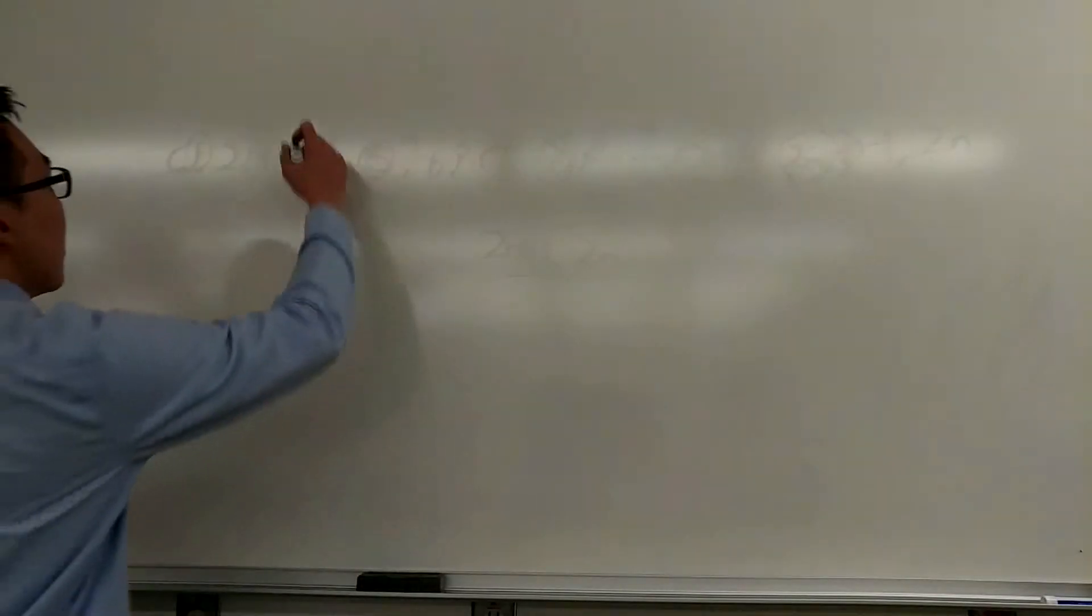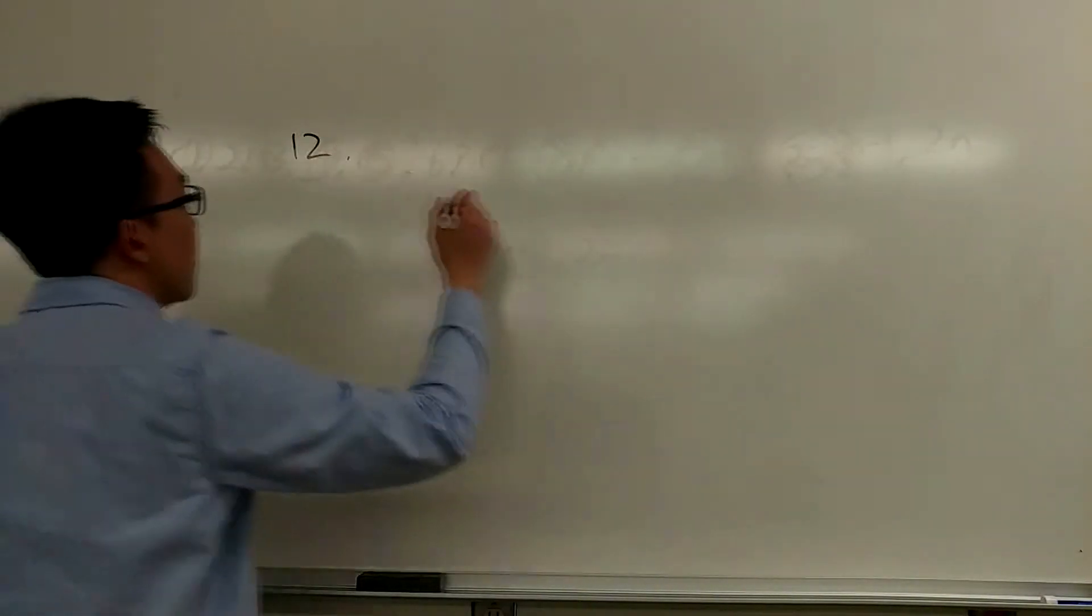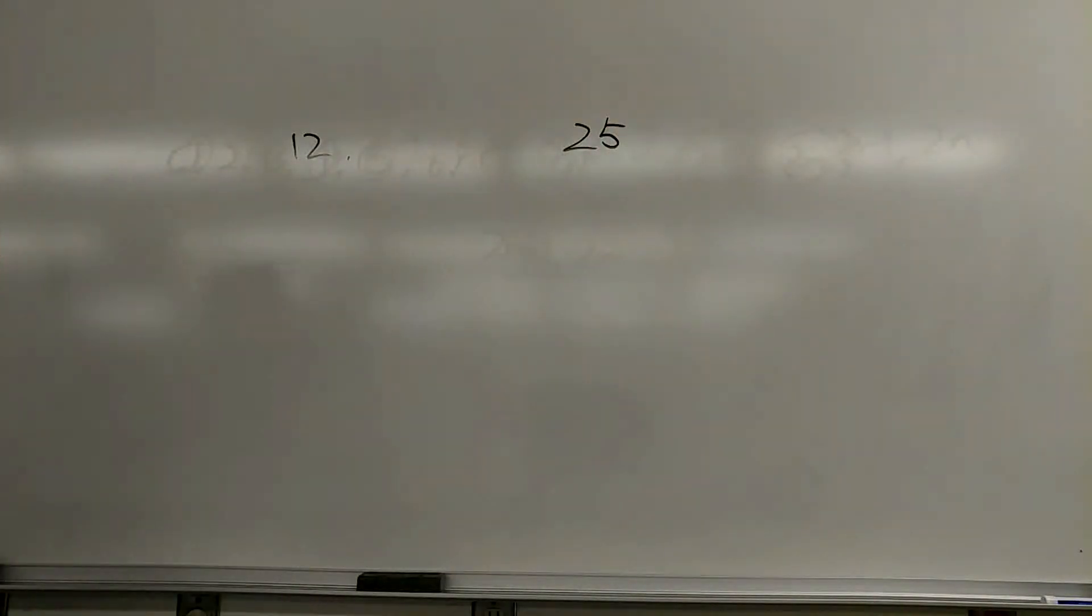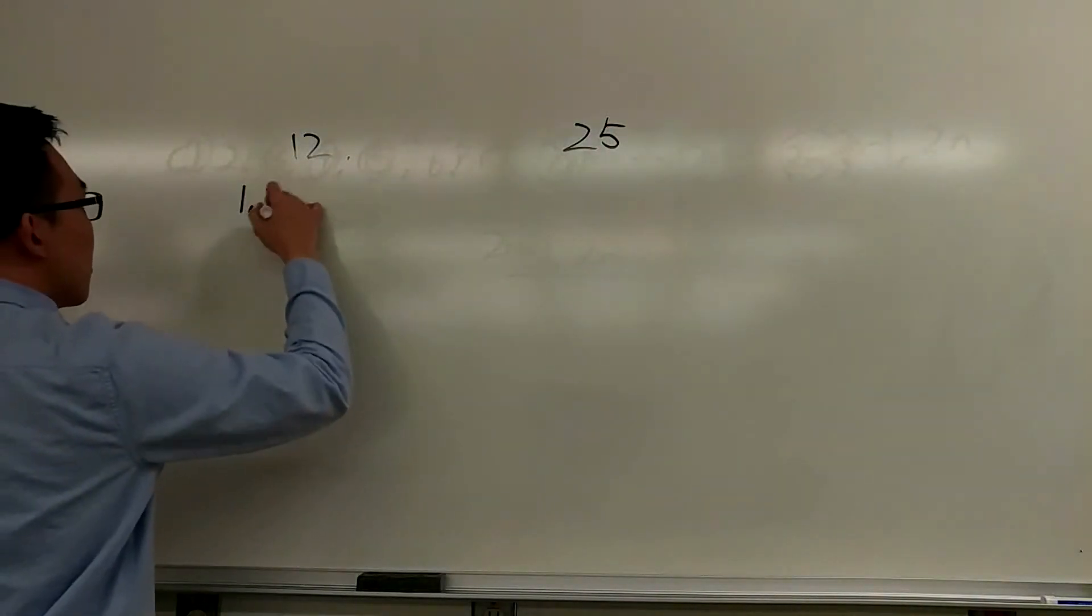Two integers are relatively prime if they have no common positive factors besides one. The numbers themselves may not have to be prime, but the only factor in common will be one.